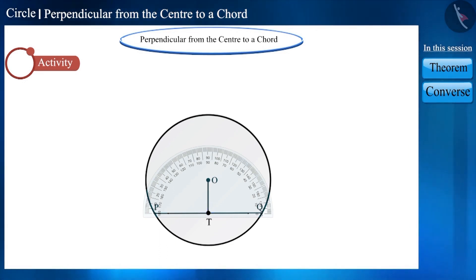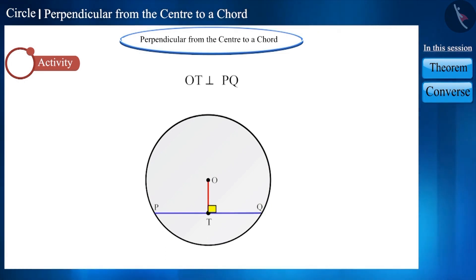Friends, you can see that the measure of these angles is 90 degrees. That is, they are right angles. Now, we can say that line segment OT is perpendicular to chord PQ.